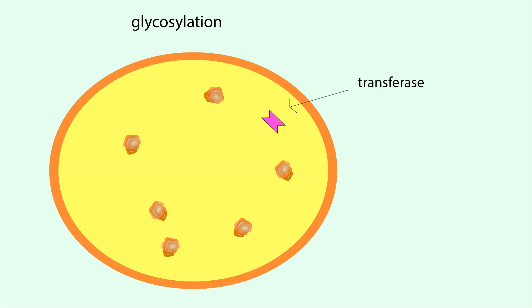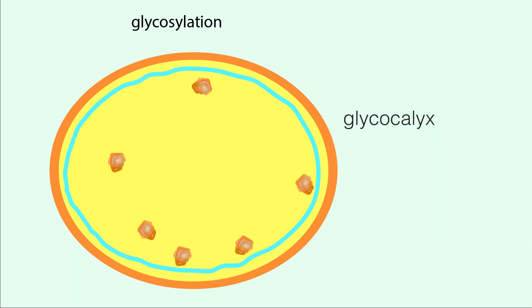Transferase enzymes in the endosome covalently attach carbohydrates to proteins in the endosome membrane, creating a thick protective layer called a glycocalyx, which cannot be degraded by lysosome enzymes.